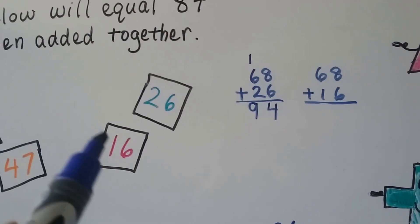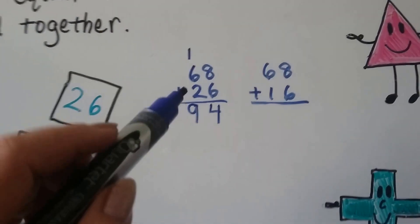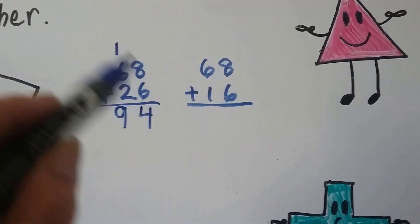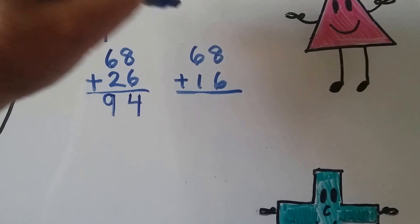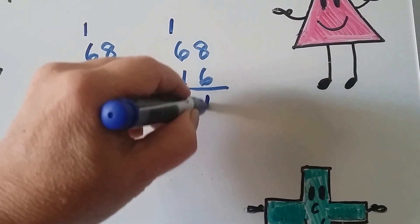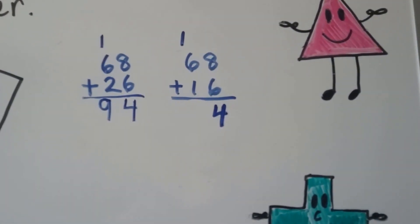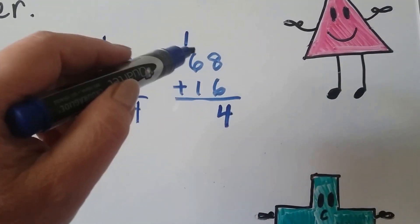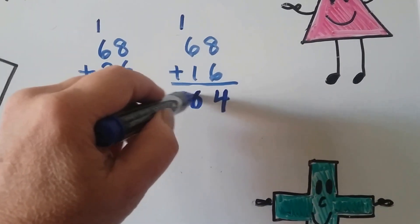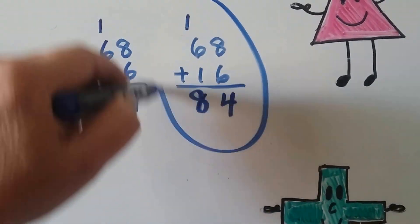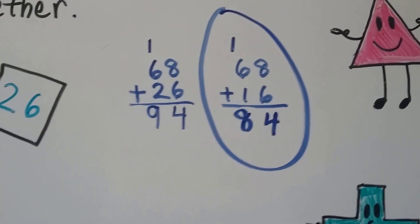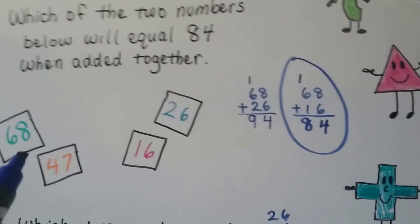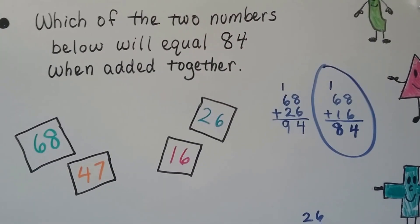We add the 68 plus the 16. We already know that 8 plus 6 is 14 — we already did that. So 8 plus 6 is 14. Now we add the tens place: 6, 7, 8. And it is 84. So we know that's the right answer. 68 and 16 are the two numbers that we can add together to make 84.